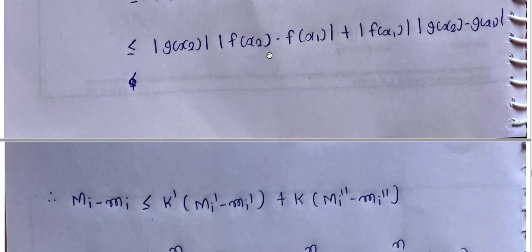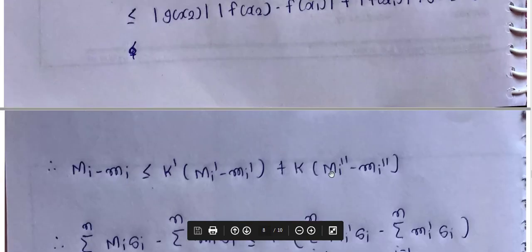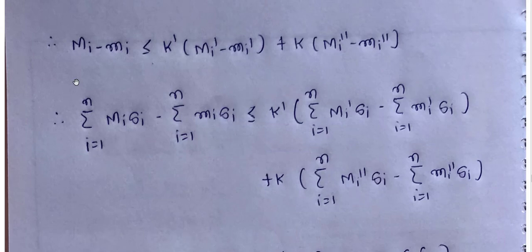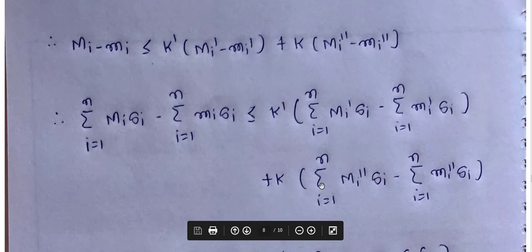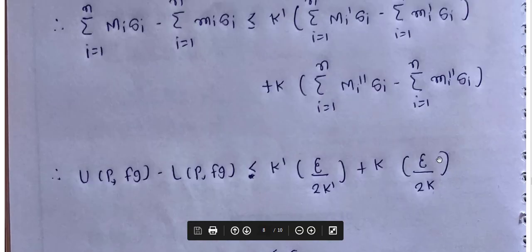Using the bounds, mod of f(x2) minus f(x1) is bounded by capital Mi' minus small mi', and mod of g(x2) minus g(x1) is bounded by capital Mi'' minus small mi''. Summing over i from 1 to n: summation of capital Mi into delta_i minus summation of small mi into delta_i is less than or equal to k' times summation of (Mi' minus mi') times delta_i plus k times summation of (Mi'' minus mi'') times delta_i.